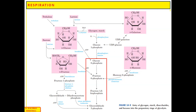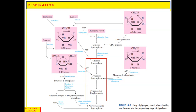The glycogen present in animals and starch present in plants are broken down into glucose-1-phosphate by their respective enzymes. Glycogen is broken down into glucose-1-phosphate by glycogen phosphorylase. Then glucose-1-phosphate is converted into glucose-6-phosphate by phosphoglucomutase. Starch is broken down into glucose-1-phosphate by starch phosphorylase. In this form, glycogen and starch enter the glycolysis process.